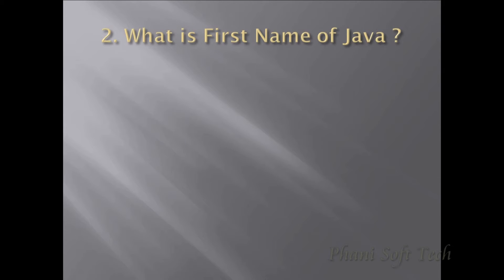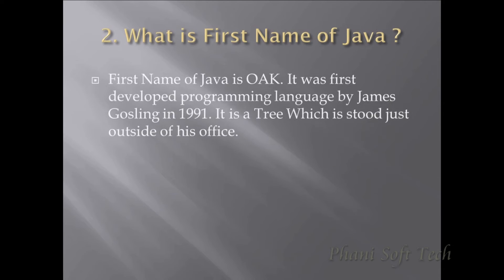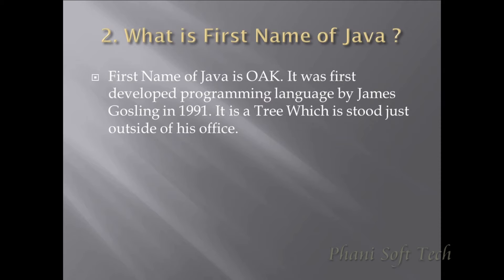The second question is: what is the first name of Java? The first name of Java — when it was first developed — was Oak, named by Gosling. The name Oak came from a tree that was set up in Gosling's office. That's why the first name of Java is Oak.